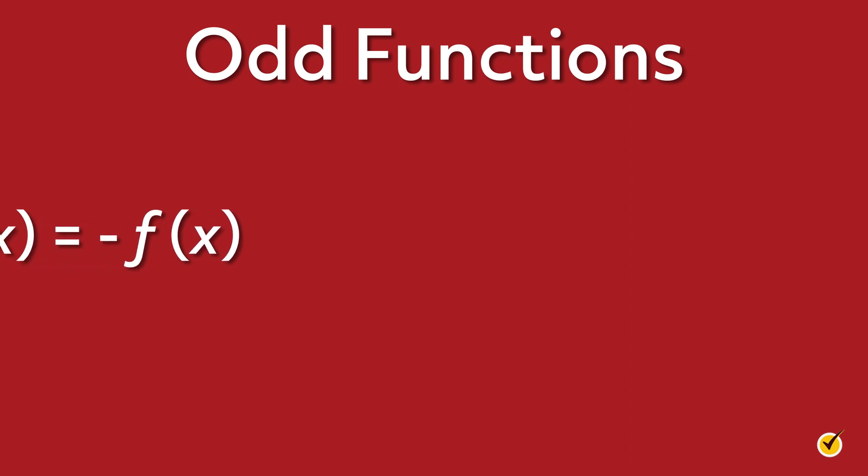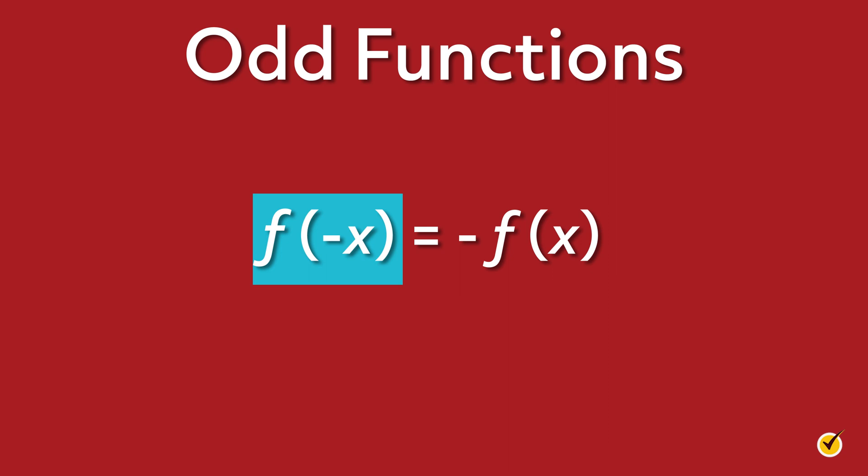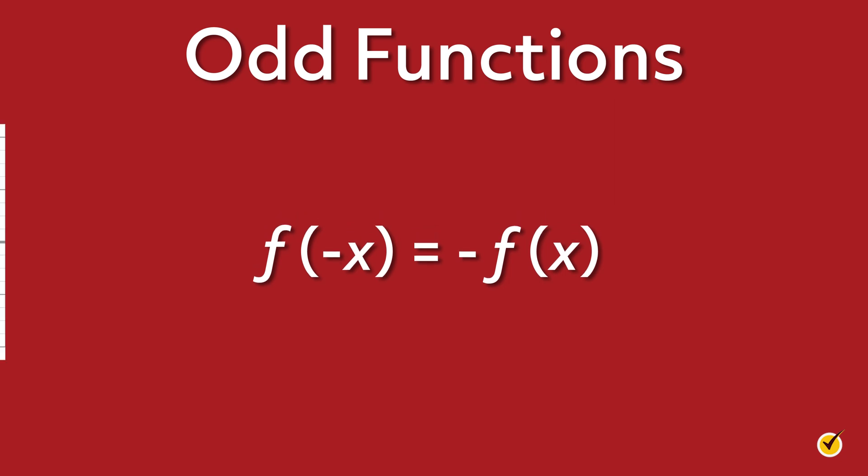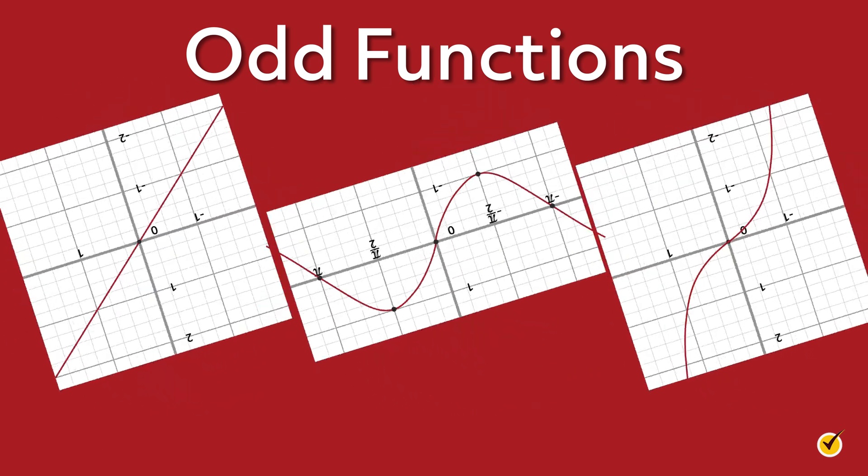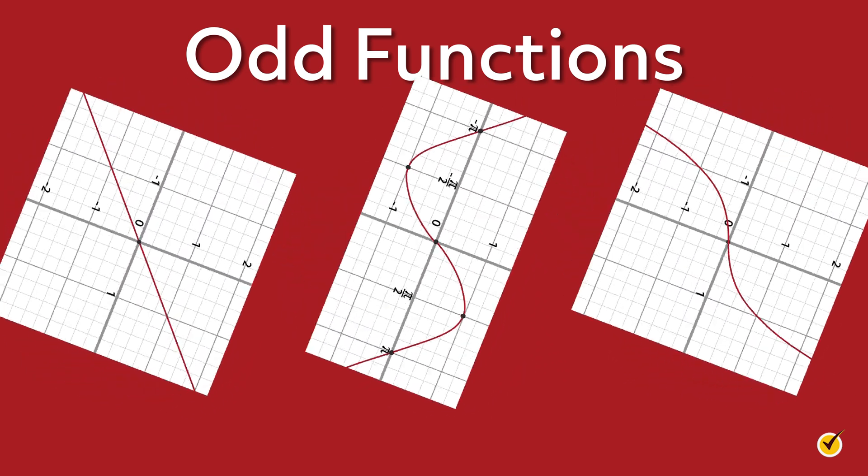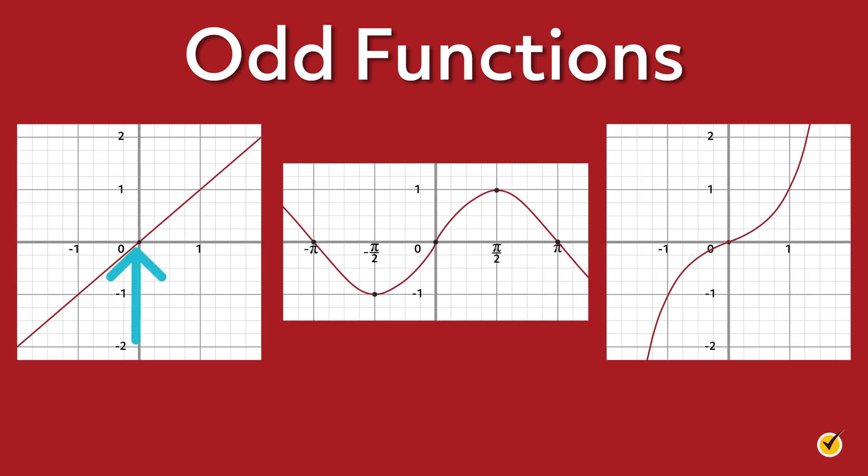Now let's talk about what odd functions are like. Consider another function f, which we will once again evaluate at negative x. But this time, instead of looking for the same f we started with, we want to see if f(-x) changes the sign of all terms in the function. In other words, if f(-x) equals negative f(x), then the function is odd. Graphically, an odd function will appear the same when we rotate it by 180 degrees, like flipping a page upside down. And it must pass through the origin.